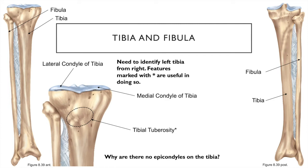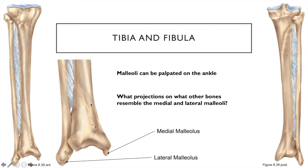The tibia and fibula make up the leg. Only the tibia bears weight — it is much thicker than the fibula. The tibia is medial; the fibula is lateral. At the top of the tibia are medial and lateral condyles articulating with the femoral condyles, and the tibial tuberosity on the anterior side allows muscle attachment. At the distal ends, instead of styloid processes as seen on the radius and ulna, these bones have malleoli: the medial malleolus on the tibia and the lateral malleolus on the fibula form the ankle.